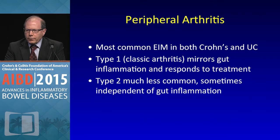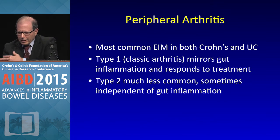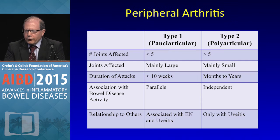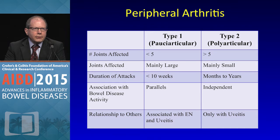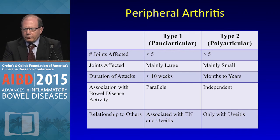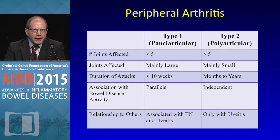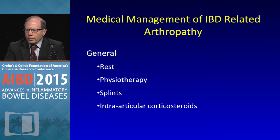For peripheral arthritis, Type 1 is the classic — it mirrors bowel inflammation, usually fewer than two joints, mainly large joints. Type 2 is less common but involves a lot of small joint aches. When patients are actually doing well, it's very independent of IBD activity, can be seen with uveitis, and is not easy to treat. Management includes physiotherapy, rest, splints, and referral to your rheumatologist.